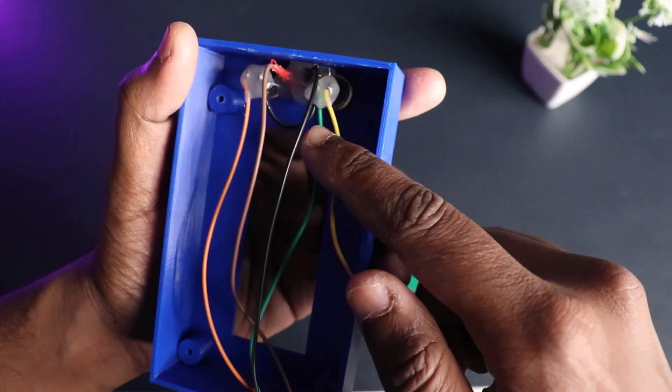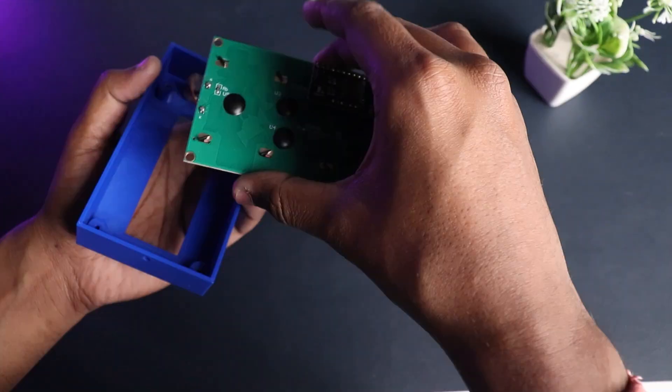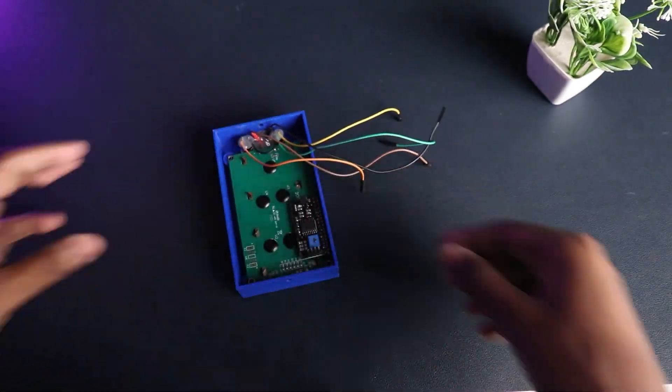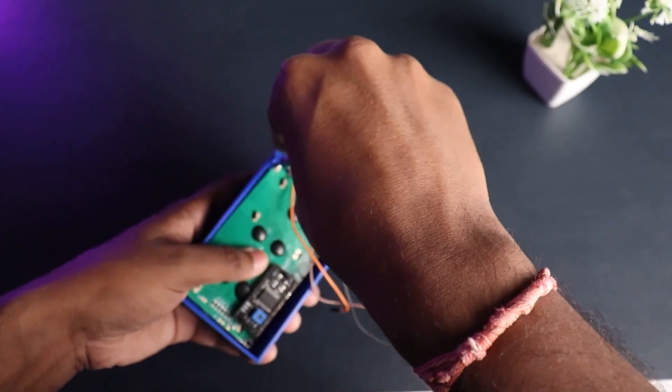fitted switches on the front part and connected the wires. Get your LCD display and place it on the posts inside. Secure the display with screws.